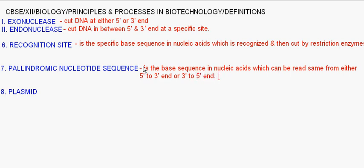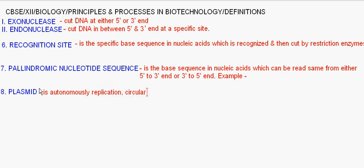I'll show the example of a palindromic sequence later. Now coming to plasmid. Plasmid is an autonomously replicating, circular, single-stranded, extra-chromosomal DNA with specific properties.